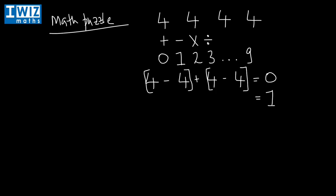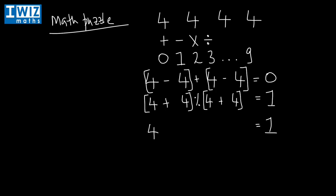Now let's try and get to one. We have four fours: four, four, four, and four. We can do four plus four, which gives us eight, and divide it by four plus four again — so eight divided by eight is simply one. We can also get to one another way: four divided by four is one, and then we add four minus four, which is zero. So one plus zero equals one. The lesson here is that the answer may not be unique.